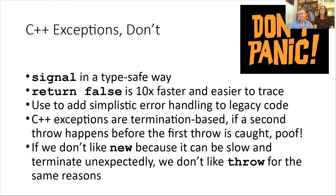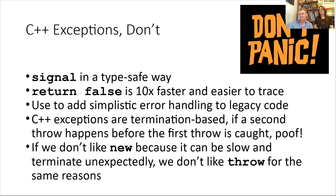C++ exceptions: don't use them in safety-critical systems. They signal errors in a type-safe way with return false, and are used to add simplistic error handling to legacy code, but C++ exceptions are termination-based. If a second throw happens before the first is caught, the program terminates. Just as we don't like new because it can be slow and terminate unexpectedly, we don't like throw for the same reasons. In real-time and safety-critical embedded systems, we never want to terminate a server or embedded system, so we stay away from exceptions entirely.